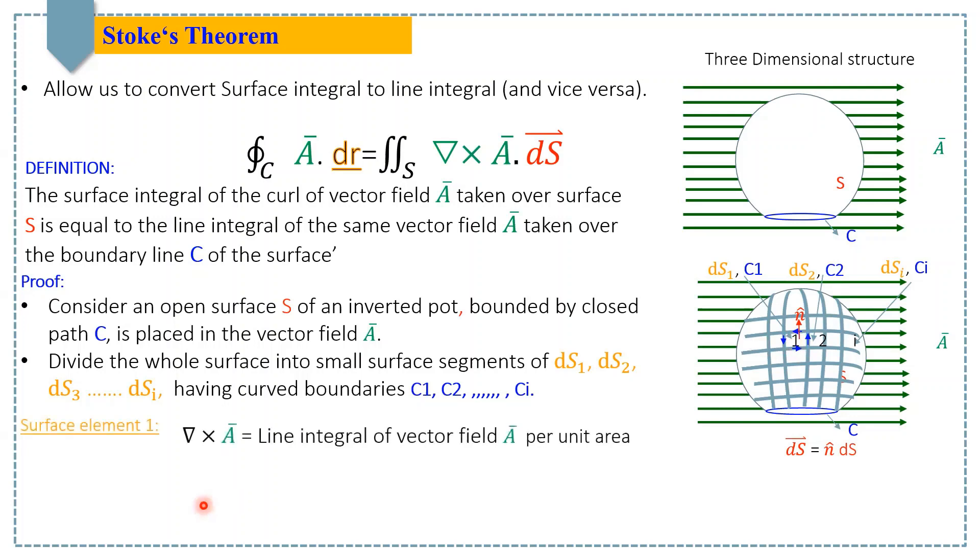By using this definition, we can find how much is the line integral of vector field A on this surface dS1. That can be written as del cross A is equal to line integral C1 A dot dr at segment dS1.